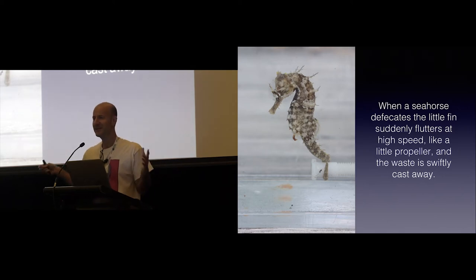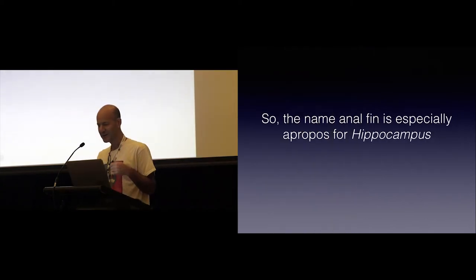The utility of the fin becomes apparent if you keep a seahorse in an aquarium and watch it for any length of time. What it actually does is when the seahorse defecates, the fin starts spinning, and then the poo starts flying, and it just goes away. That's really weird. I mean, think about it. This is not just a fin like any other fish has. This is a fin that's highly evolved. It actually has a hinge like the puffer fishes do, and it can rotate. Very strange.